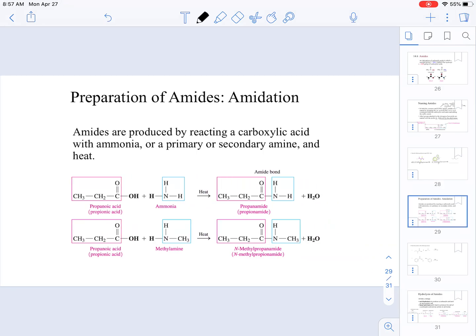As I just mentioned a few moments, when it comes to the preparation of amides, understand that we're going to be using a carboxylic acid and a type of amine. It could be ammonia, it could be a primary, it could be a secondary amine, and we're going to heat them.